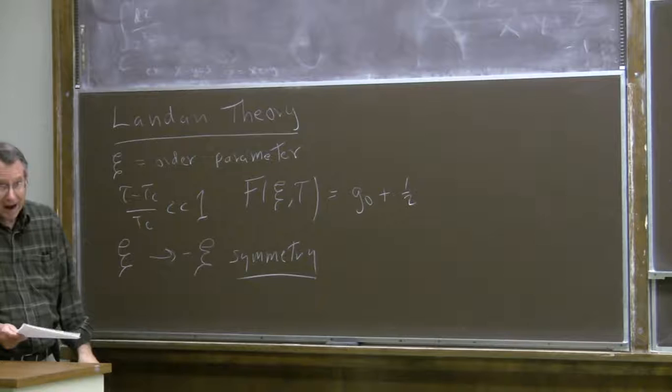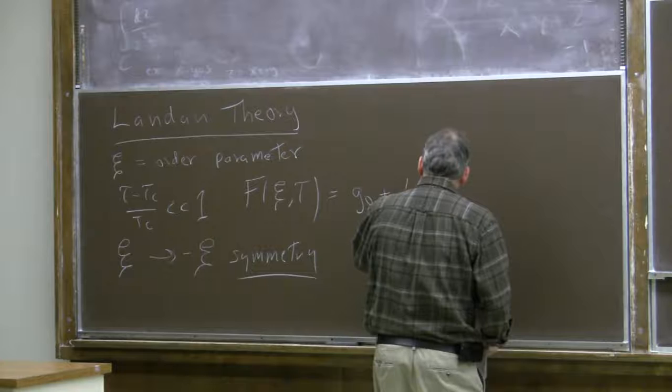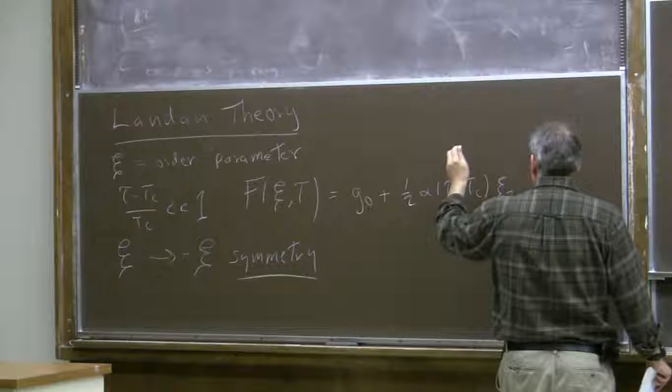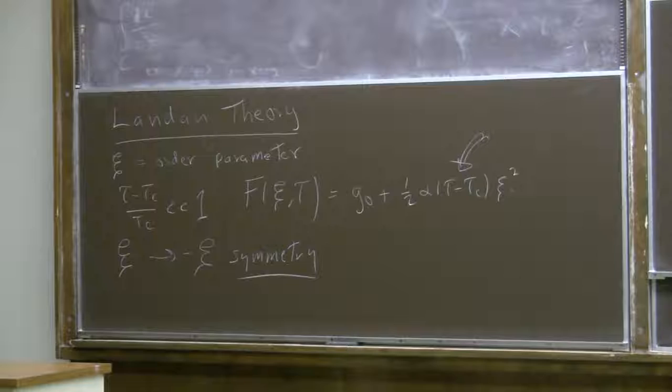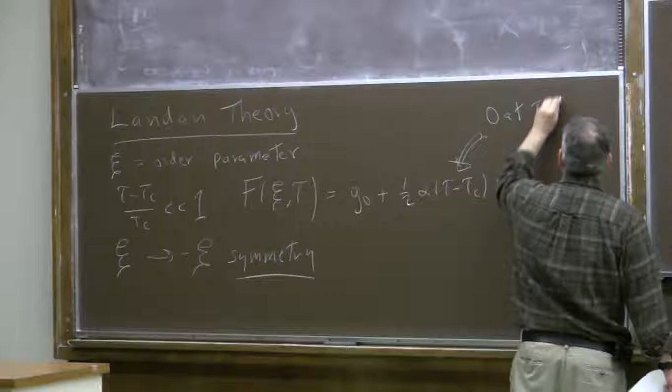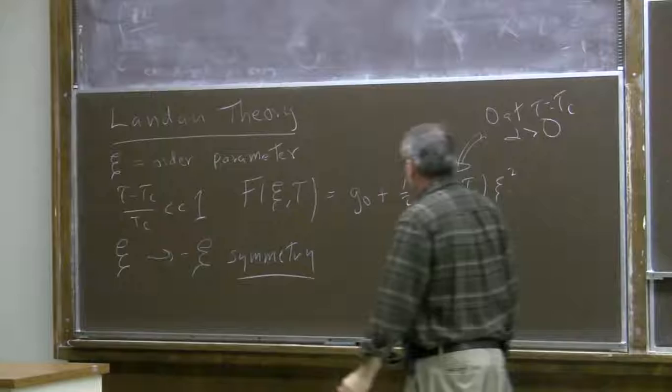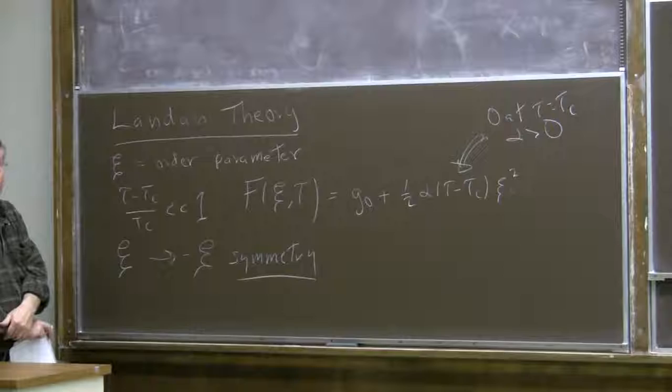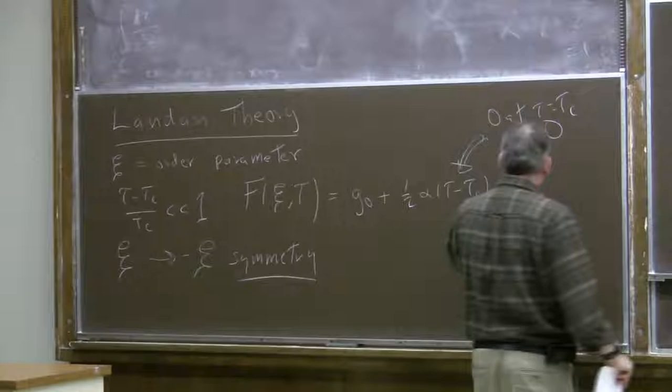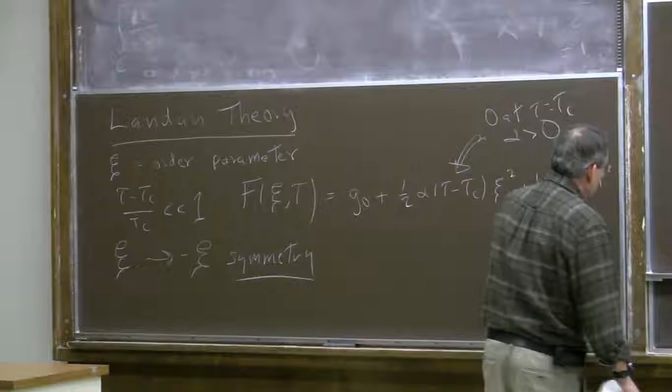The next term in the power series expansion in the order parameter is quadratic, and that quadratic term has a coefficient which changes sign at the critical temperature. I'm considering alpha to be positive, so the quadratic term has a positive coefficient for temperature above T_c and negative for T less than T_c. There are also higher-order terms of all even powers.